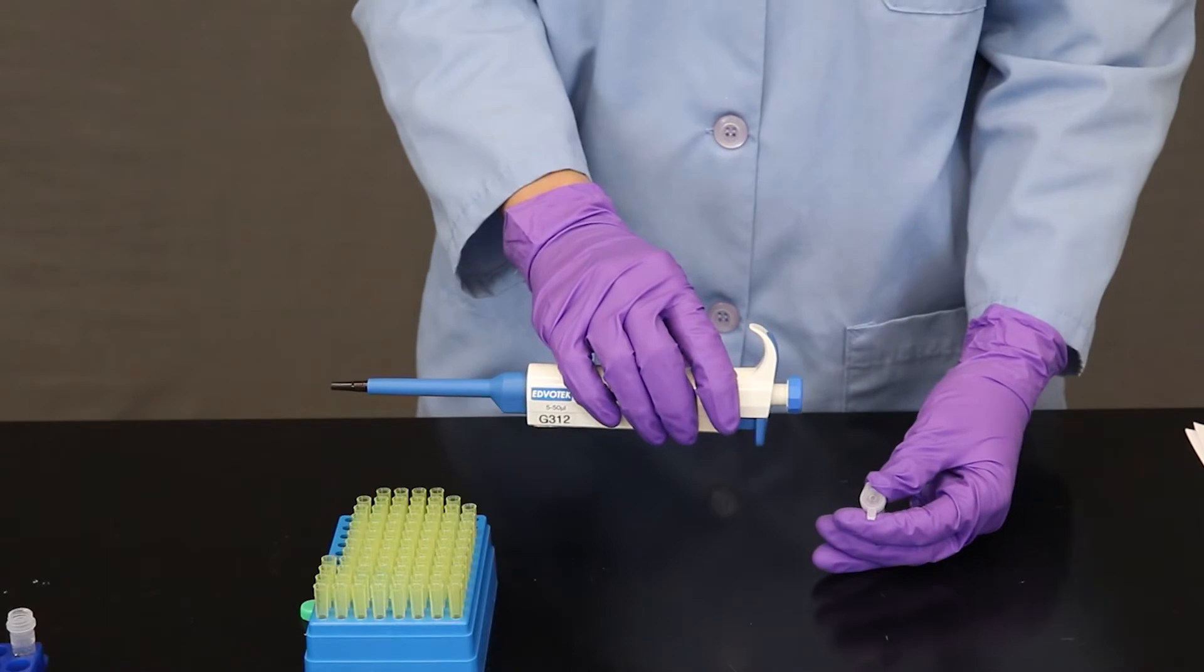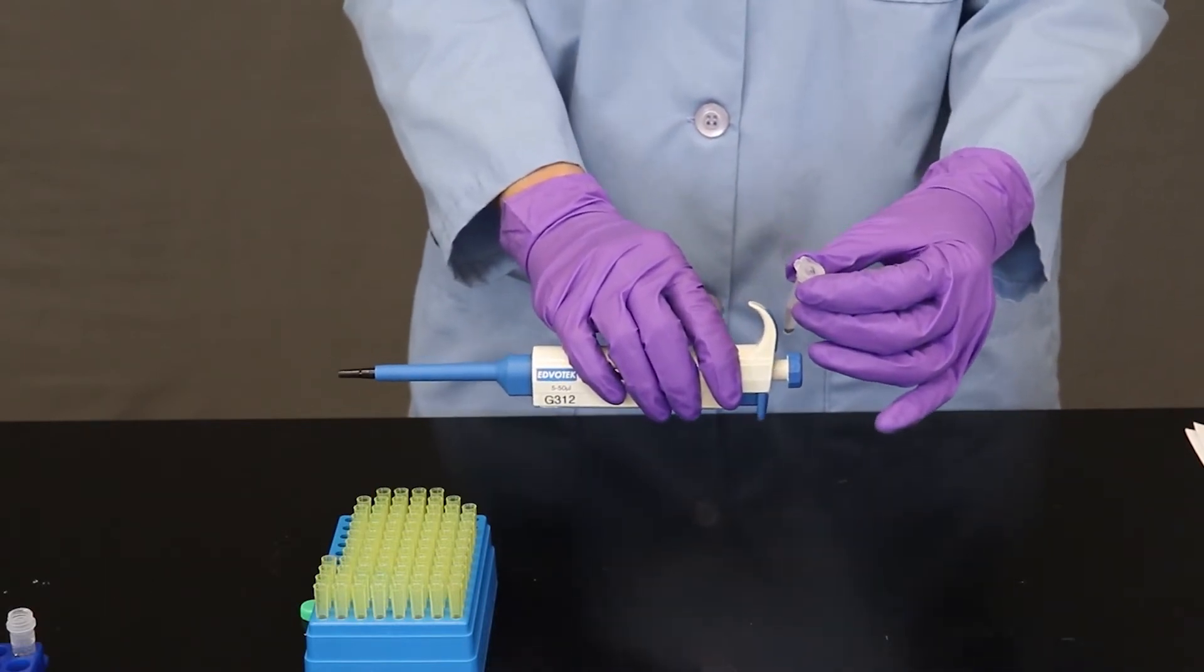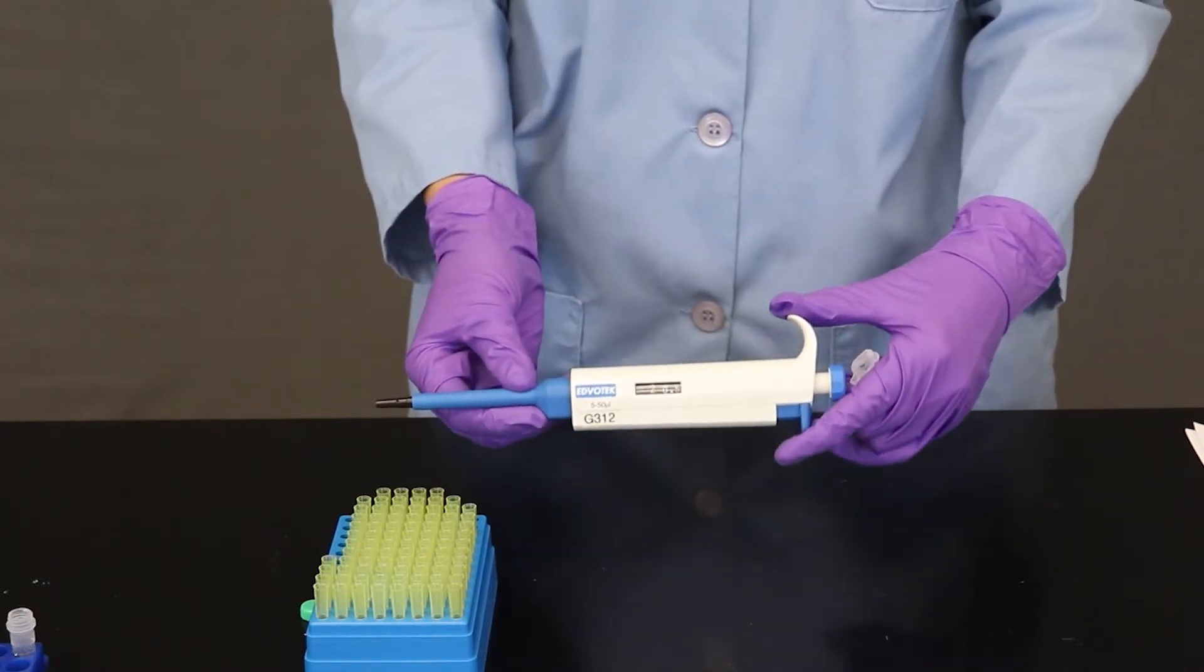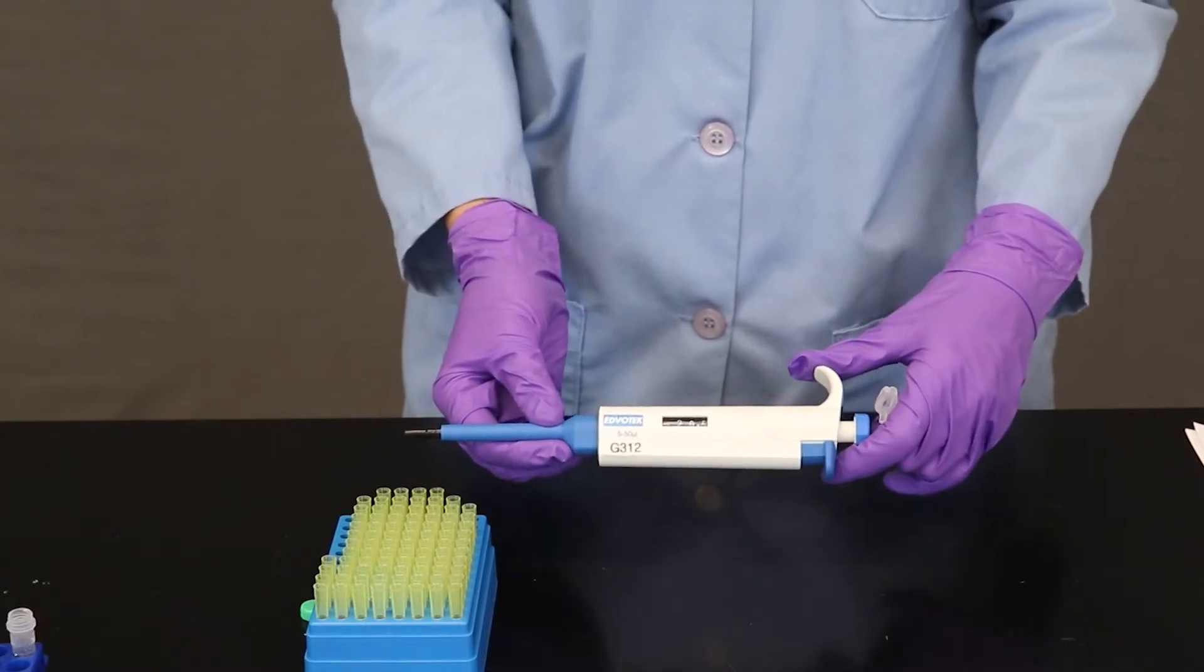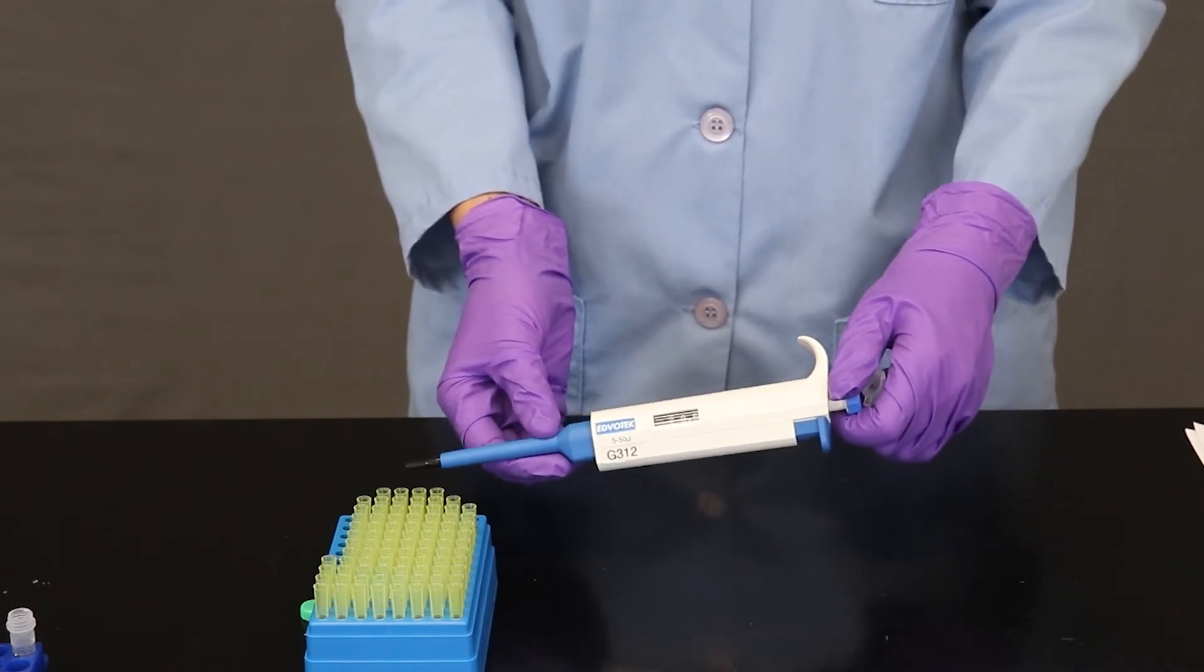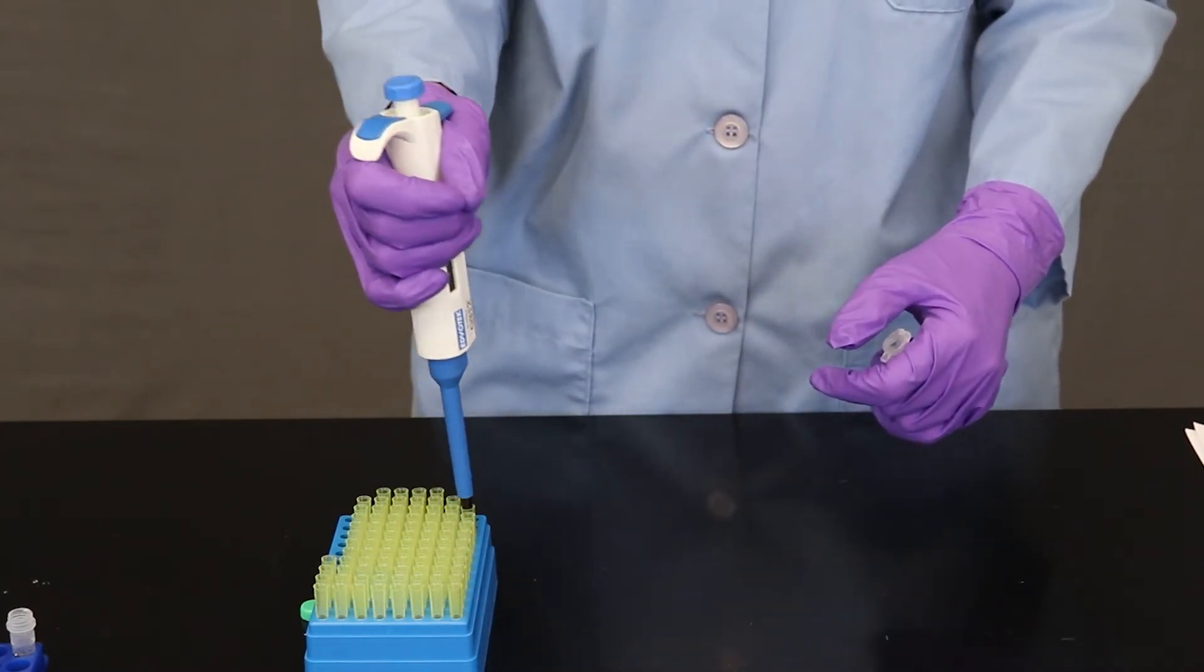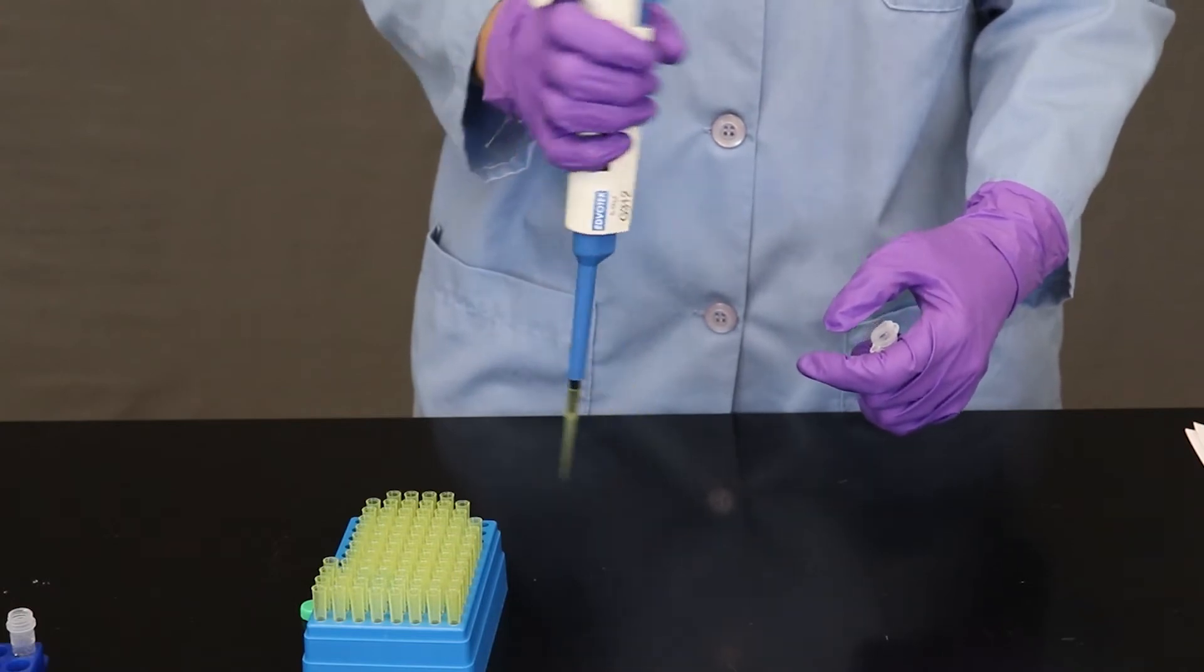Now I'm ready to add the proteinase K to our insect tissue. And I wanted to talk about the micropipetter tool that I'm going to use to measure out the small quantity that I need. So this particular micropipetter measures 5 to 50 microliters. One microliter is one one millionth of a liter, so it's a small quantity. And the micropipetters are always used with disposable tips. So I've added a tip to the micropipetter.